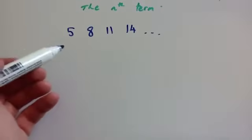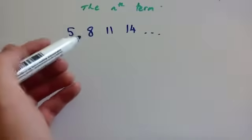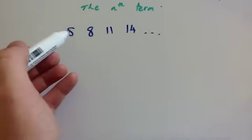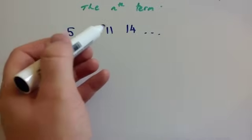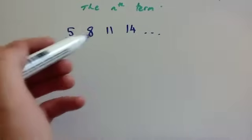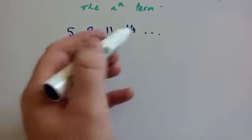You can tell it's a linear sequence because it's getting bigger by the same number each time. You can see that if we add 3 each time, you get the sequence.